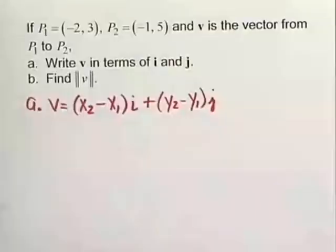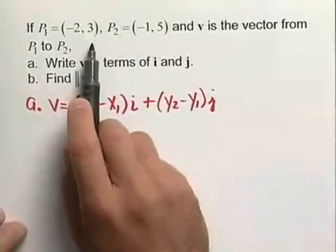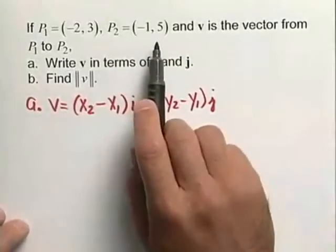Consider the following example. If point one is the ordered pair negative two comma three, and point two is the ordered pair negative one comma five,